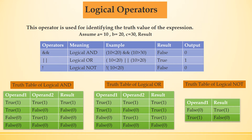Let's see the example for logical AND. The first operand says 10 is less than 20 — that is true. The second operand says 10 is greater than 30 — that is a false statement. If we go to the truth table of logical AND: first statement is true, second operand is false, then we will get false as a result. So here our result is false and it will return the value 0.